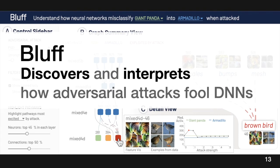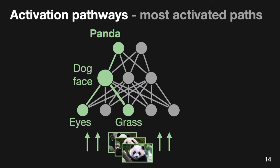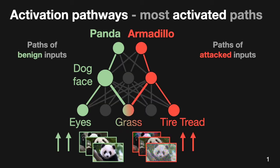We present BLUF, an interactive visualization tool for discovering and interpreting how adversarial attacks mislead deep neural networks into making incorrect predictions. Our main idea is to visualize activation pathways within a deep neural network traversed by the signals of input data. For given input data, an activation pathway consists of neurons that are highly activated and the most influential paths. Activation pathways represent what features are detected and how those features are related to contribute to the final prediction.